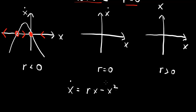When r equals zero, the equation becomes x-dot equals minus x-squared, which is just the standard upside-down quadratic. There is one fixed point at the origin. On both sides x-dot is negative, so if you perturb x to positive values you move back in, but if you perturb to negative values you run away. This gives the fixed point a half-stability.